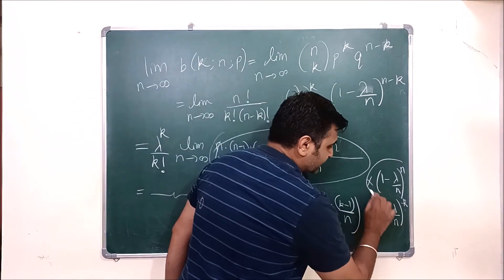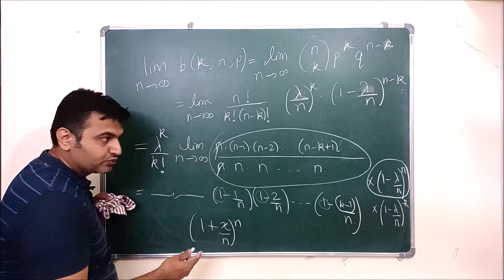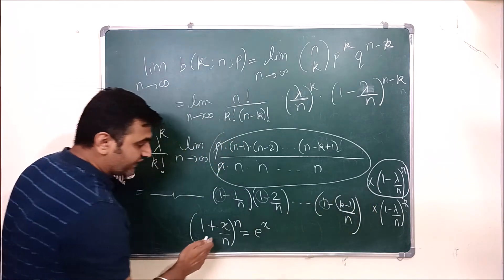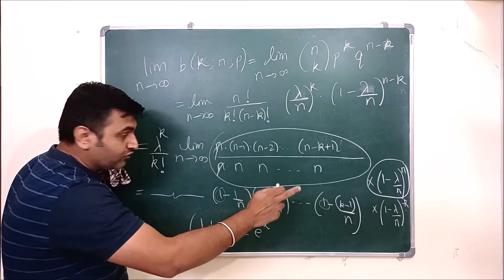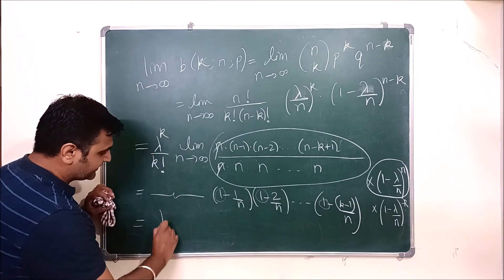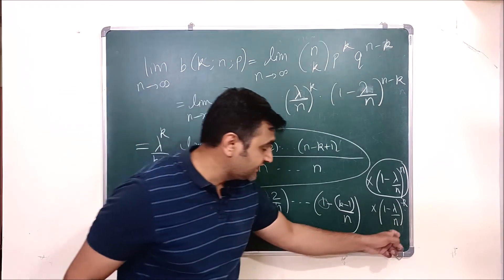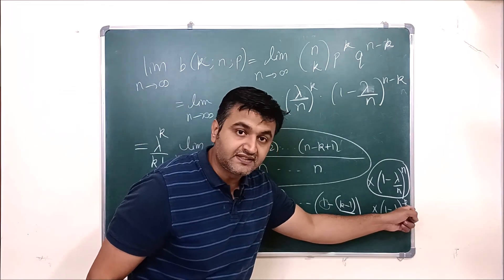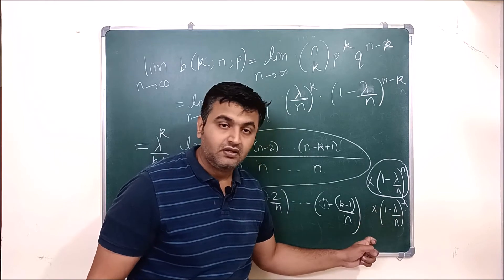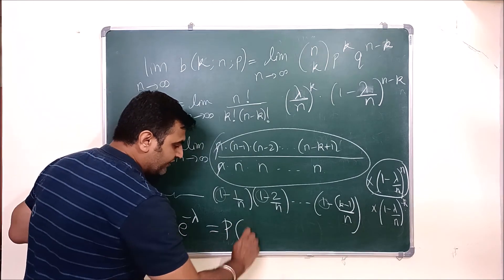Recall that the limit as n goes to infinity of (1 plus x/n) raised to n equals e raised to x. Applying this with x equal to minus lambda, the term (1 minus lambda/n) raised to n becomes e raised to minus lambda as n goes to infinity. For the remaining term (1 minus lambda/n) raised to minus k: since lambda and k are fixed, as n goes to infinity this is something over infinity, which is 0, and 1 minus 0 is 1. So this term is also 1.